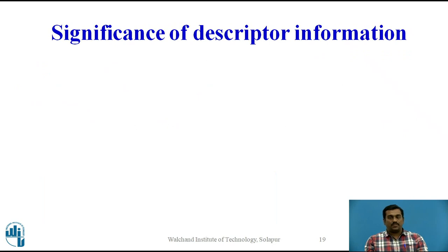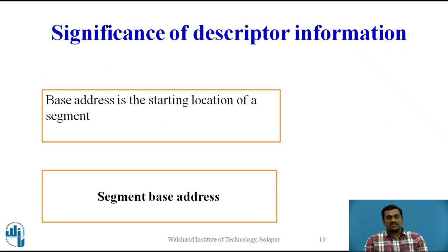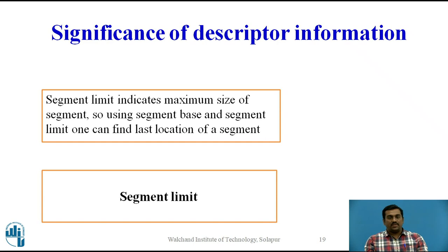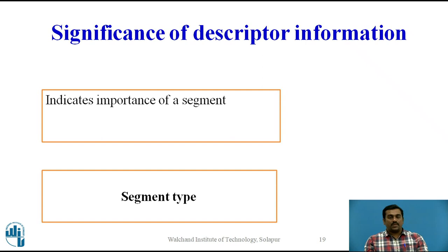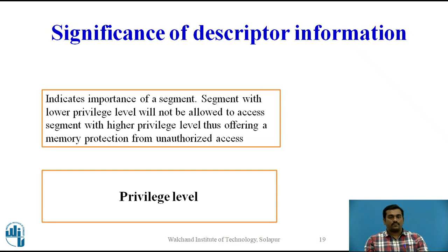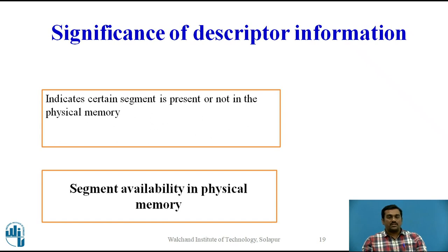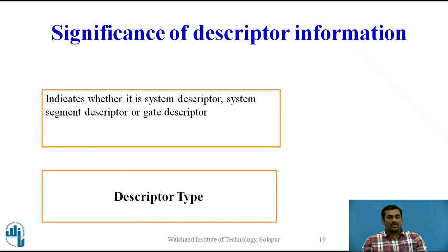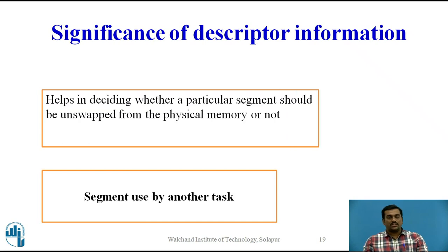The segment base address is the starting location of a segment. Segment limit indicates the maximum size of a segment — using base and limit one can find the last location of a segment. Segment type and privilege level both indicate the importance of a segment. A segment with a lower privilege level will not be allowed to access a segment with a higher privilege level, thus offering memory protection from unauthorized access. Segment availability indicates whether a segment is present in physical memory. Descriptor type indicates whether it is a system descriptor or gate descriptor. The segment-used-by-another-task field helps decide whether a segment should be unswapped from physical memory or not.